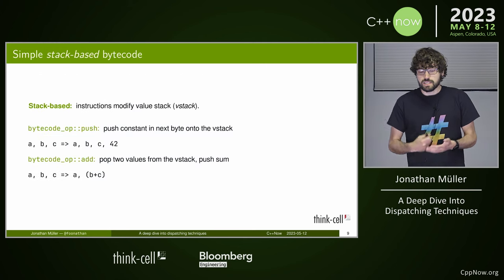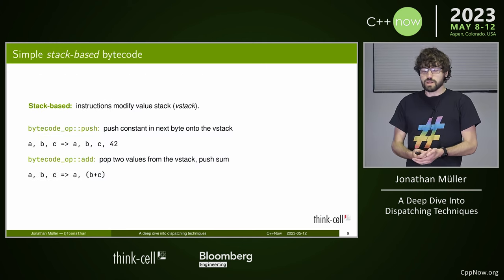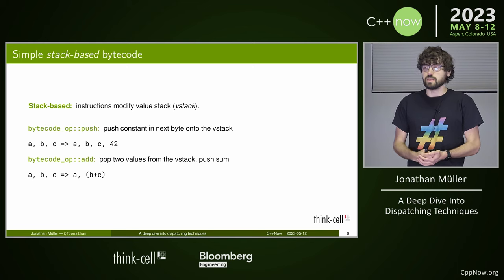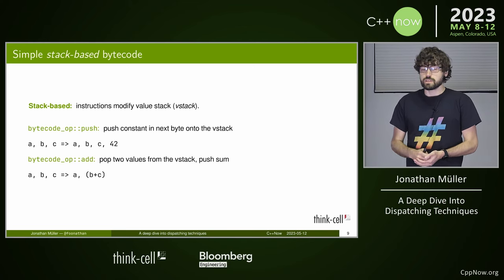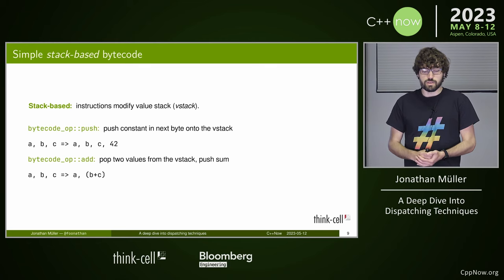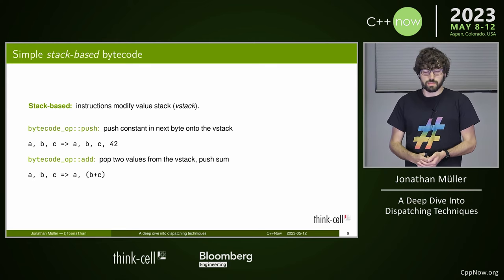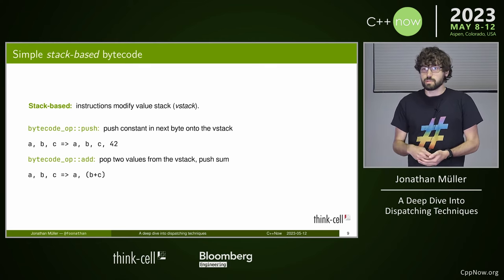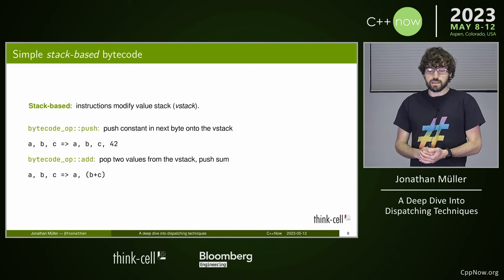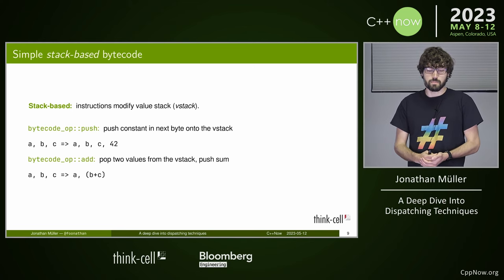Each instruction starts with the opcode and then has multiple optional bytes for the payload. The bytecode is stack-based, meaning instructions don't access registers — they modify a value stack, or VStack for short. For example, we have a push instruction which pushes a constant onto the VStack; that constant is specified as payload in the next byte of the bytecode.